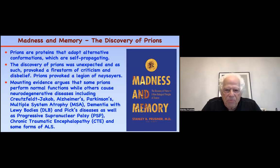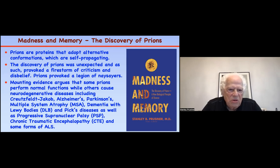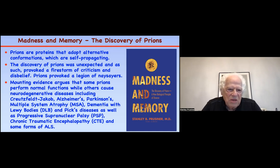I wrote a book published in 2014 that summarizes all of this work and tries to make it more accessible — I recommend it to anyone who wants to pursue this further. The key points throughout the book are that prions are proteins that adopt alternative conformations which are self-replicating. The discovery of prions was unexpected and provoked a firestorm of criticism and disbelief. There is mounting evidence that many diseases besides Creutzfeldt-Jakob disease — Alzheimer's disease, Parkinson's disease, and more — are caused by different prions with different proteins and different amino acid sequences.